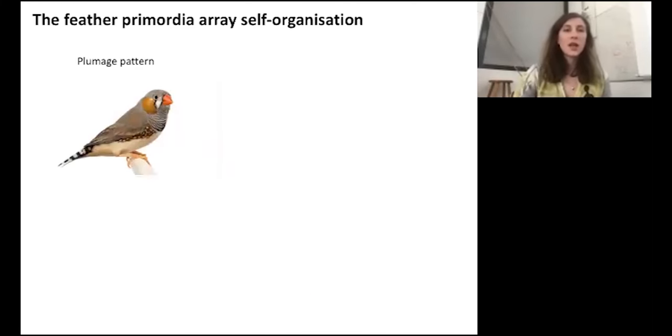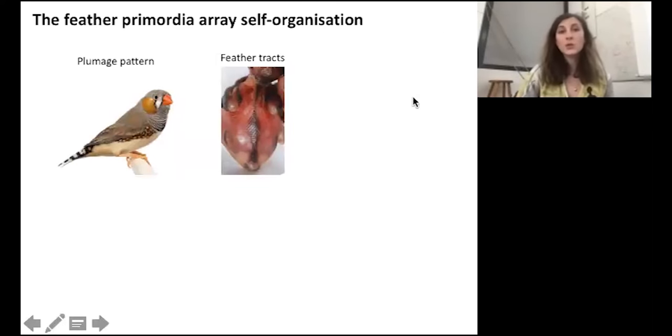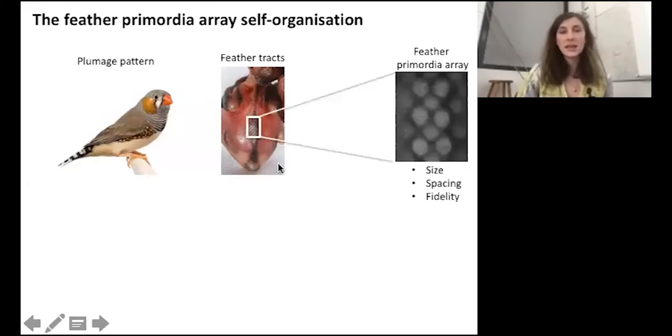To answer it, in the lab we study the feather array. In birds, feathers do not cover all the parts of the body but they are limited to some areas called tracts separated by glabrous area. If we zoom inside this tract, feathers take a specific geometry defined by the size, the spacing and the fidelity of the motif.